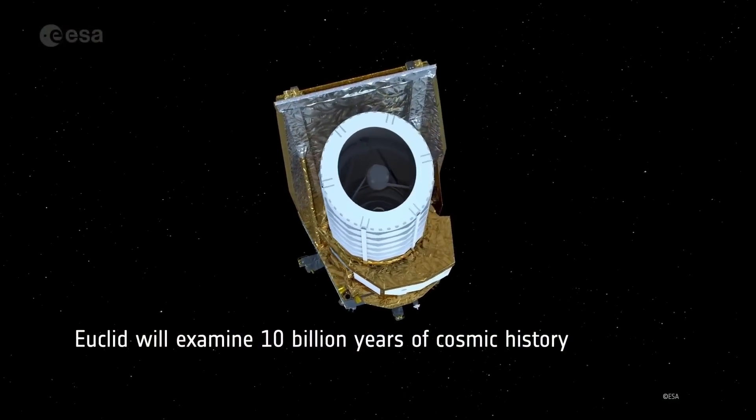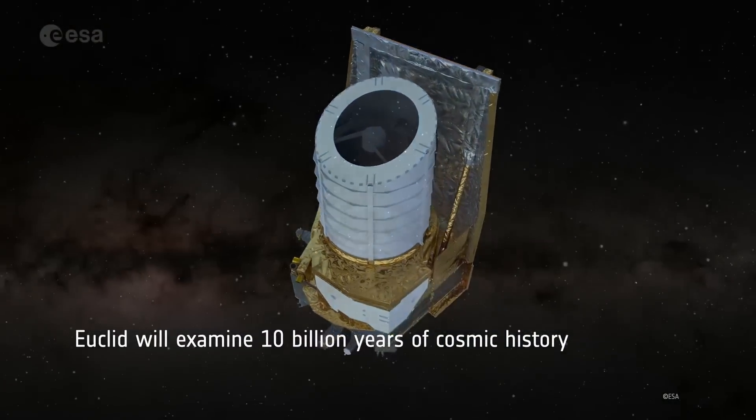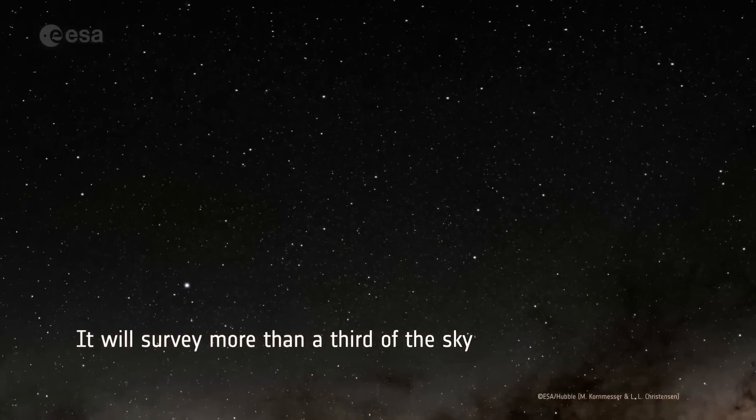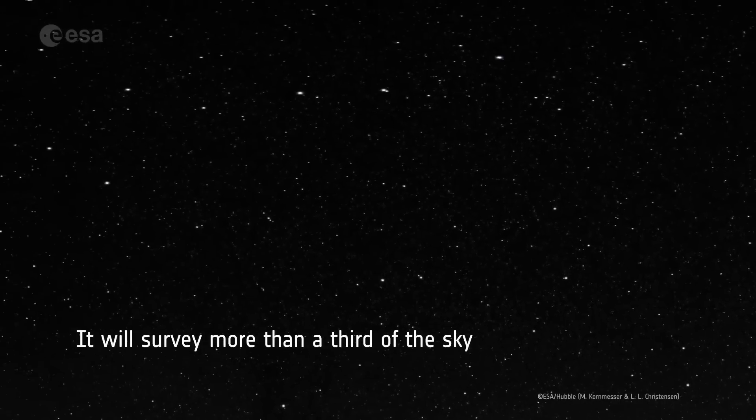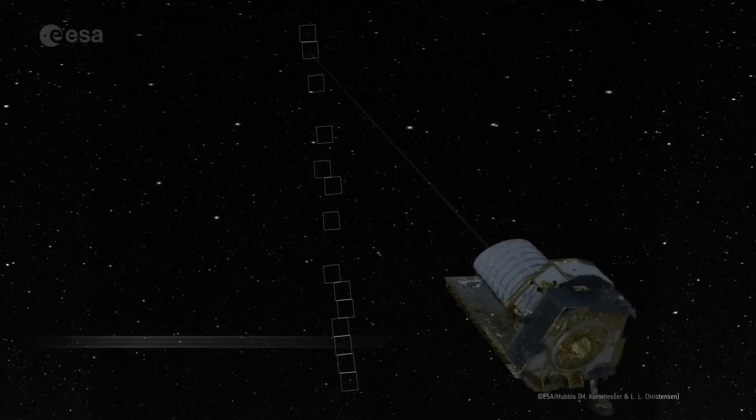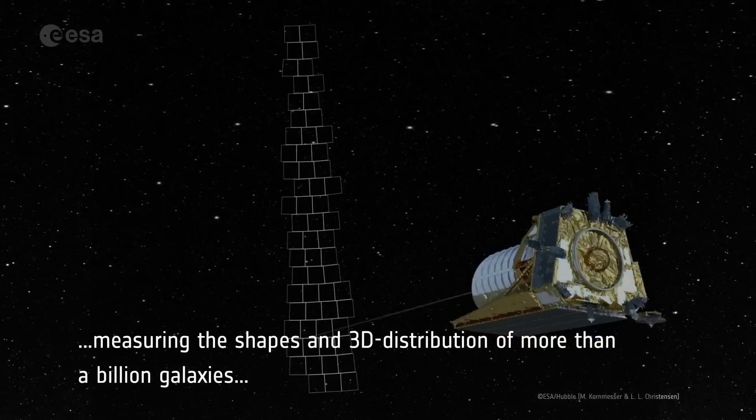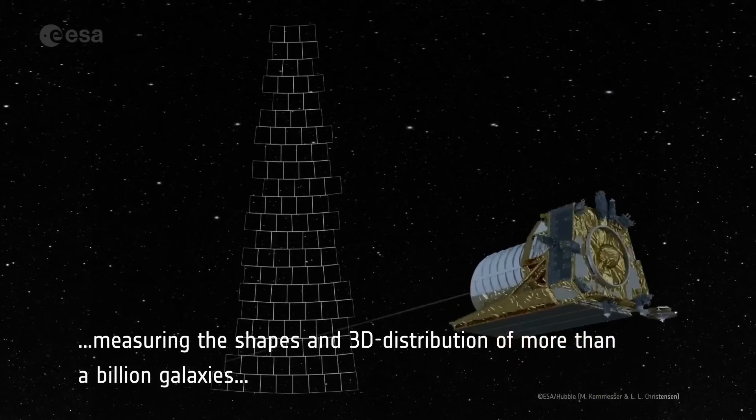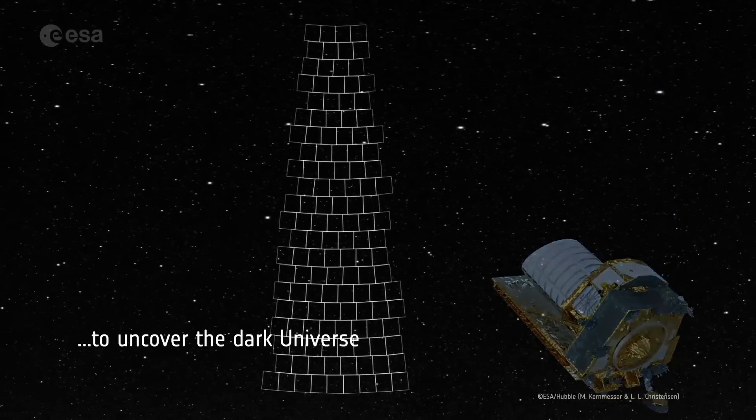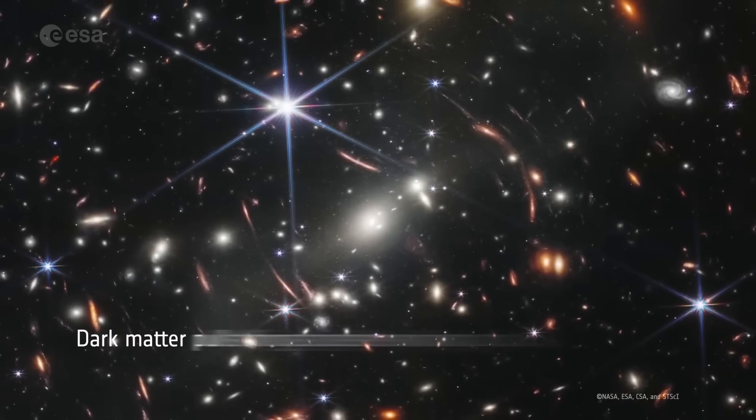But how do you study something that can't be seen? Europe's new Euclid telescope that launched last week may have just the solution. The European Space Agency's Euclid Space Telescope was launched for a six-year mission to shed light on dark energy and dark matter and chart the largest ever map of the universe.